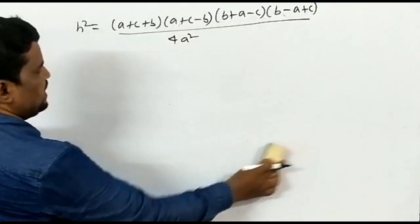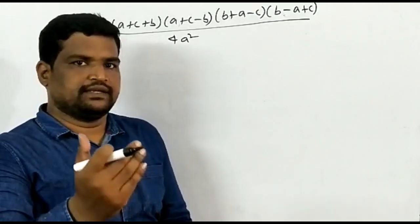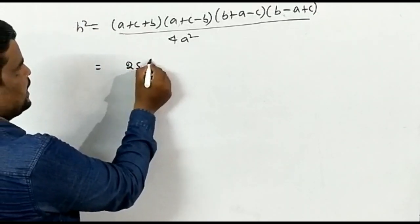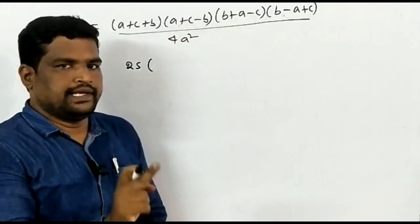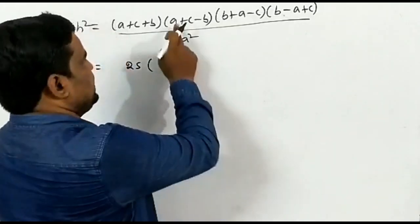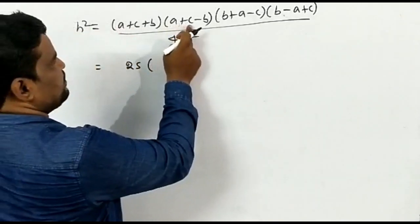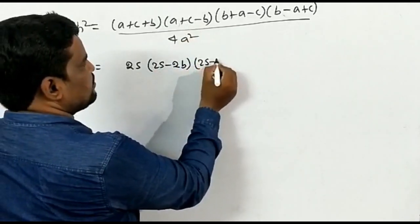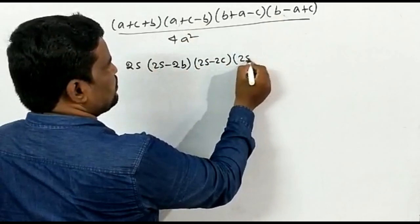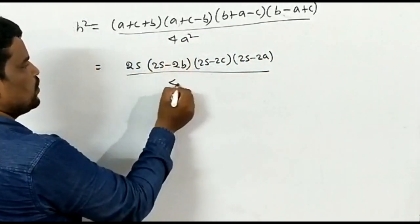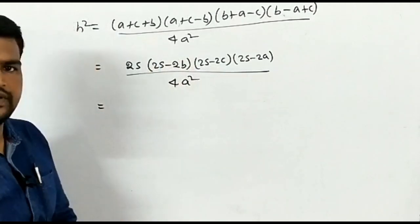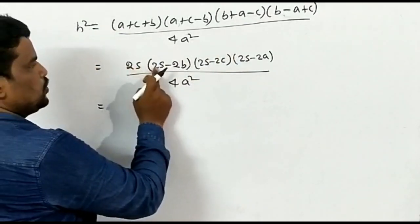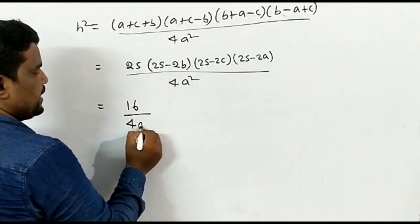We know that the perimeter A + B + C = 2S. Substituting: A+B+C = 2S; A+C−B = 2S−2B; A+B−C = 2S−2C; B+C−A = 2S−2A. So H² = (2S)(2S−2B)(2S−2C)(2S−2A) / 4A².